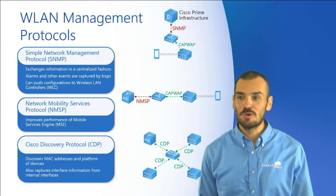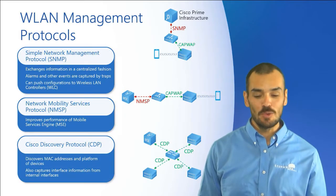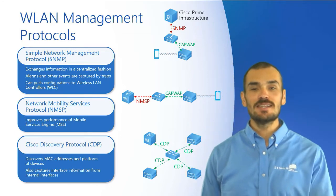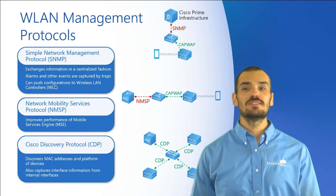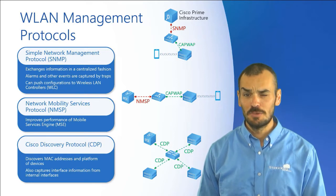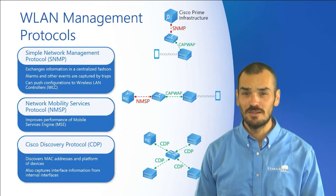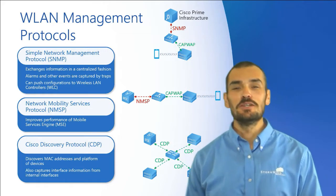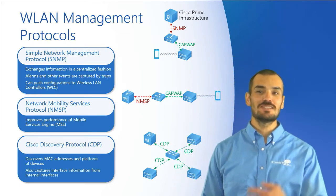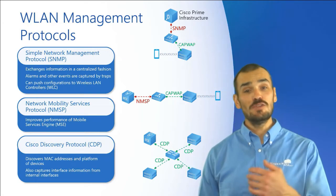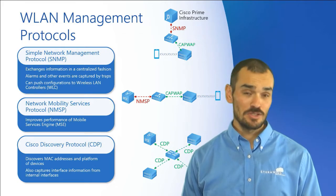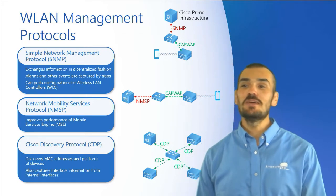When we talk about wireless LAN management protocols, SNMP, or the Simple Network Management Protocol, is found at the application layer. SNMP is used to centralize the collection of network information. In a Cisco wireless architecture, SNMP is used between management stations and wireless LAN controllers. If you add Cisco Prime Infrastructure to the mix — of course Cisco would love you to spend more money on their products — SNMP can also push configurations down to those wireless LAN controllers.